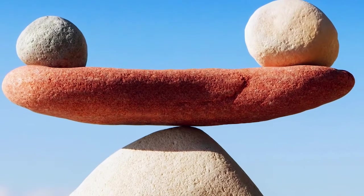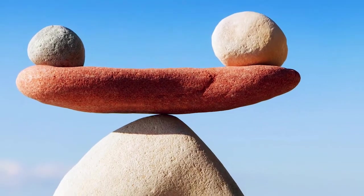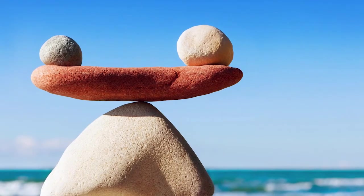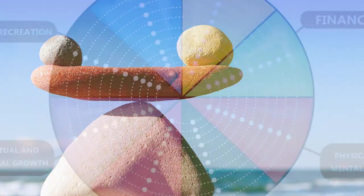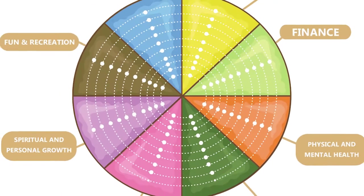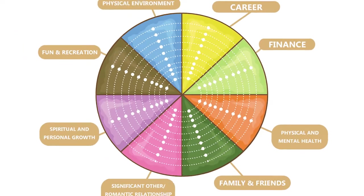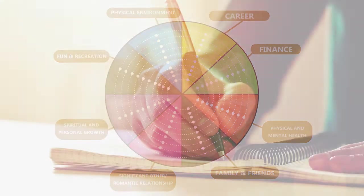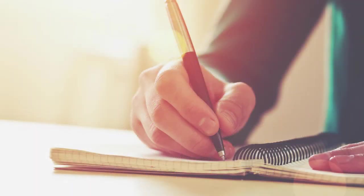Creating a balanced life can be a challenge. Luckily, there are tools you can use to achieve balance, such as the Wheel of Life. The Wheel of Life is an extremely powerful tool that you can use to get an overview of your life. By filling it in, you will get a good overview of your life and see the areas where you need to improve the most to find that balance.